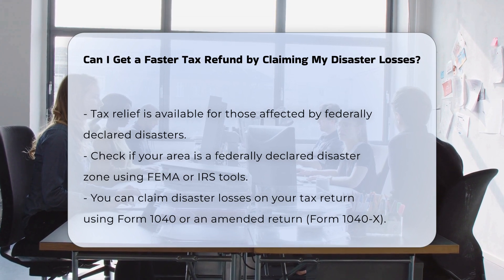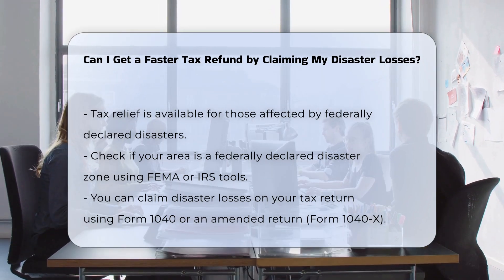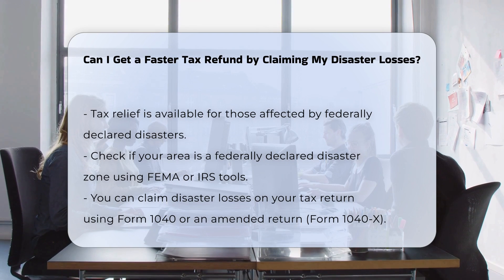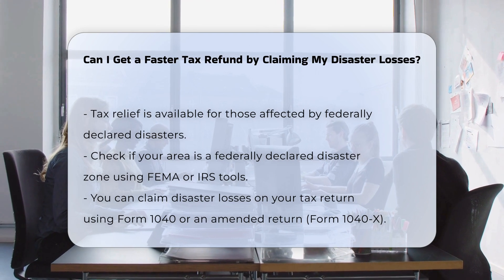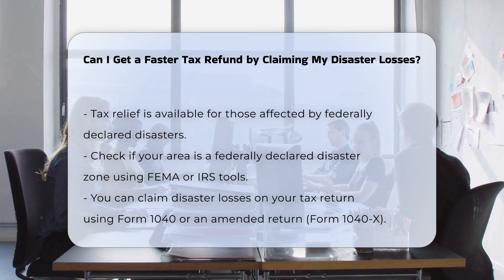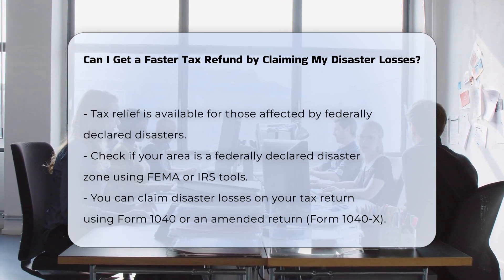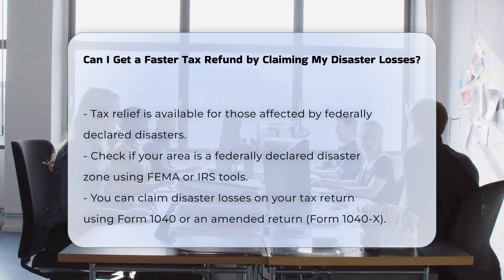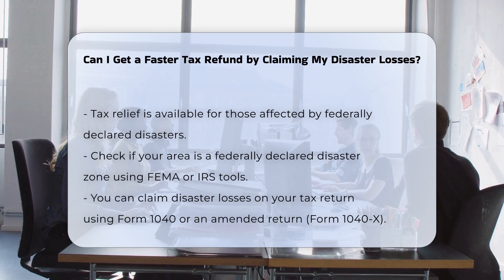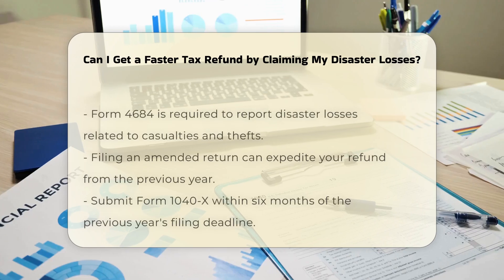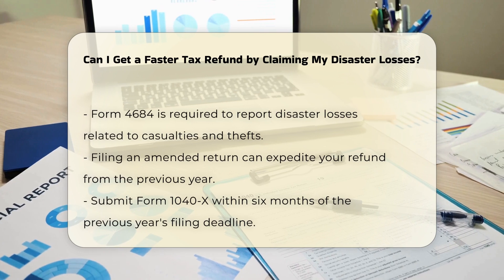Claiming losses on your tax return. You can claim your disaster losses on your tax return either on the Form 1040 you would normally file or on an amended return using Form 1040X. This allows you to report your losses and potentially receive a faster refund.